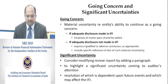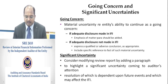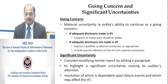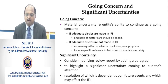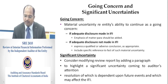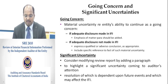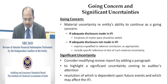The auditor must assess the going concern assumptions while conducting the review. If a material uncertainty regarding the entity's ability to continue as a going concern exists, the auditor must ensure adequate disclosure is made in the interim financial information. If adequate disclosure is made, the auditor must add a paragraph of emphasis of matter in the review report. If adequate disclosure is not made, the auditor must consider expressing a qualified or adverse conclusion as appropriate, and include a specific reference to the fact of such material uncertainty.